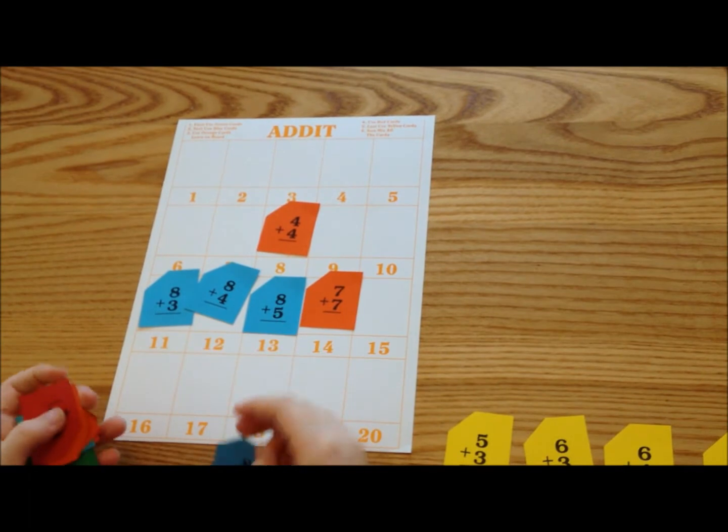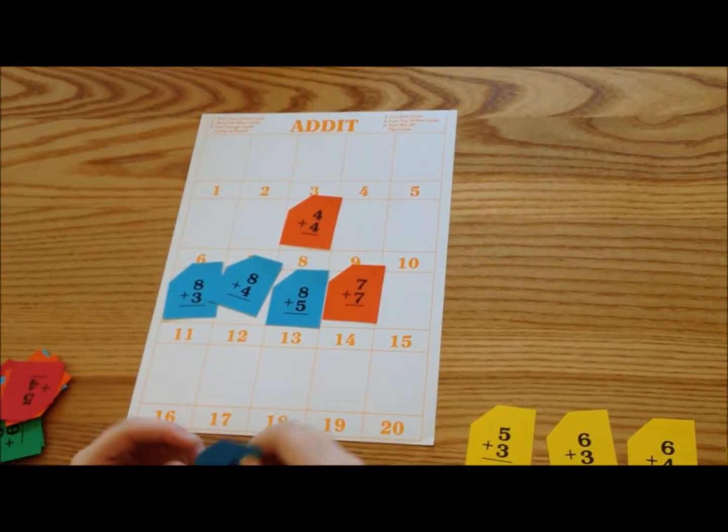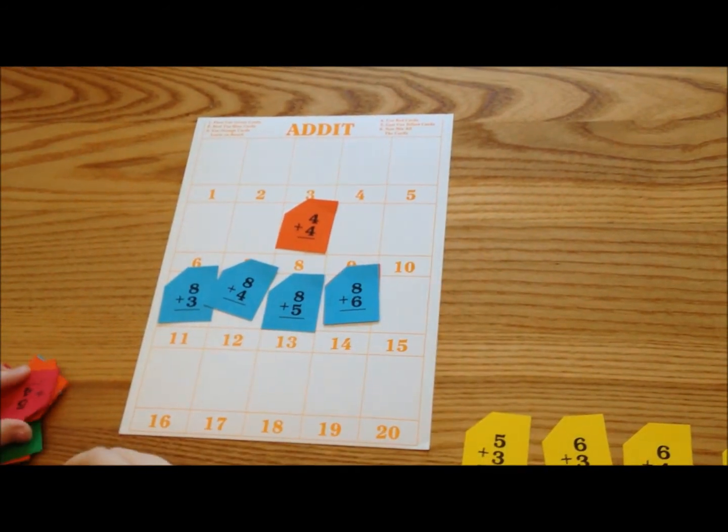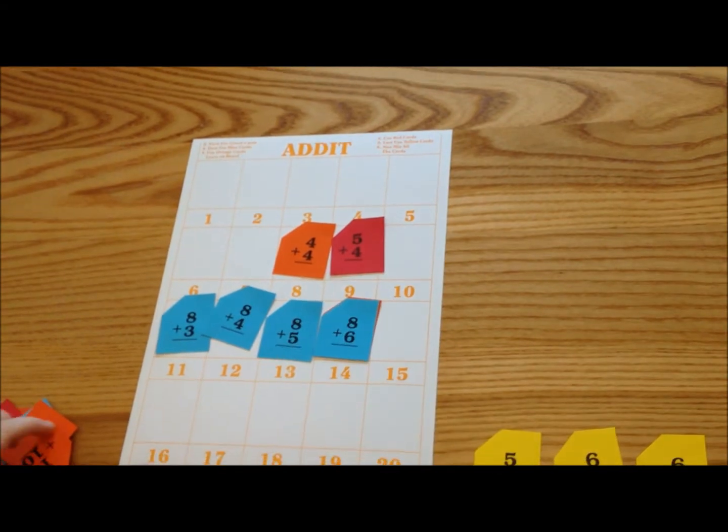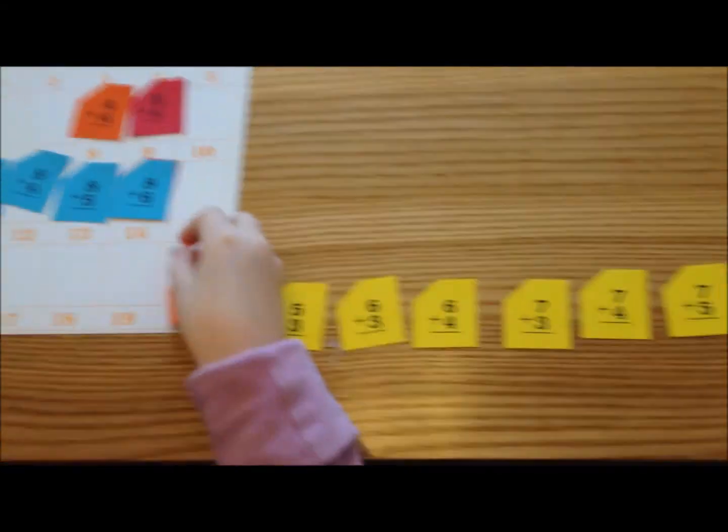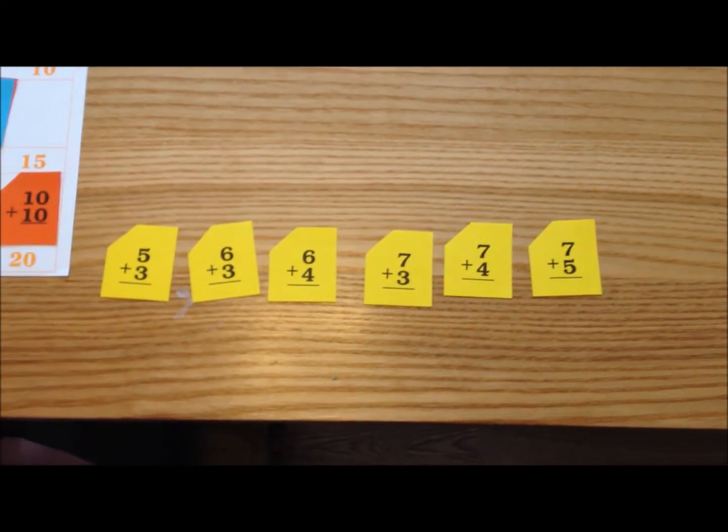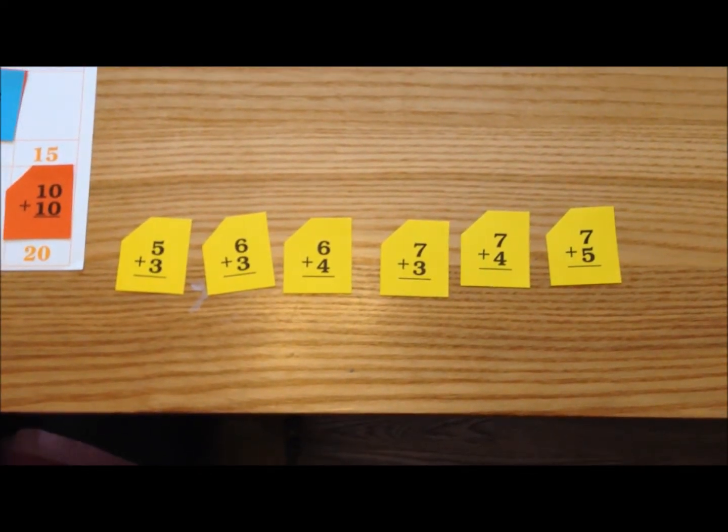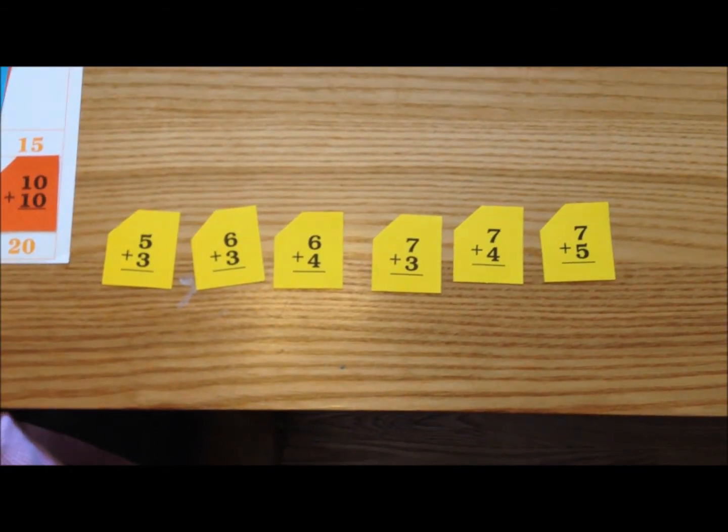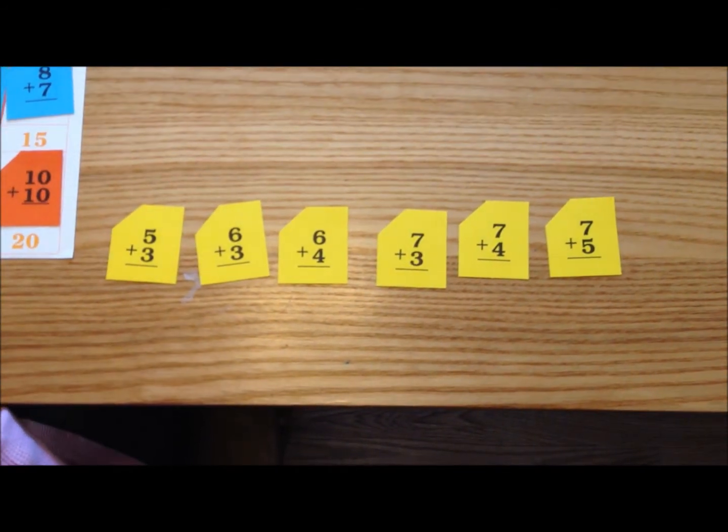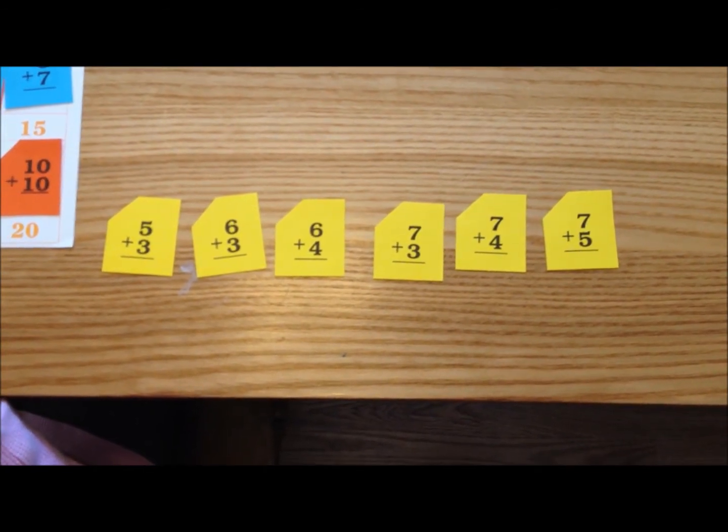So once they get really good and really fast at the orange, the blue, the red, and the green, then they add the yellow. And those are the yellow cards. And you lay them out in this order. And if you look at the two middle cards, 6 plus 4 and the 7 plus the 3, they equal 10. The 2 to the left are less than 10 and 2 to the right are more than 10.